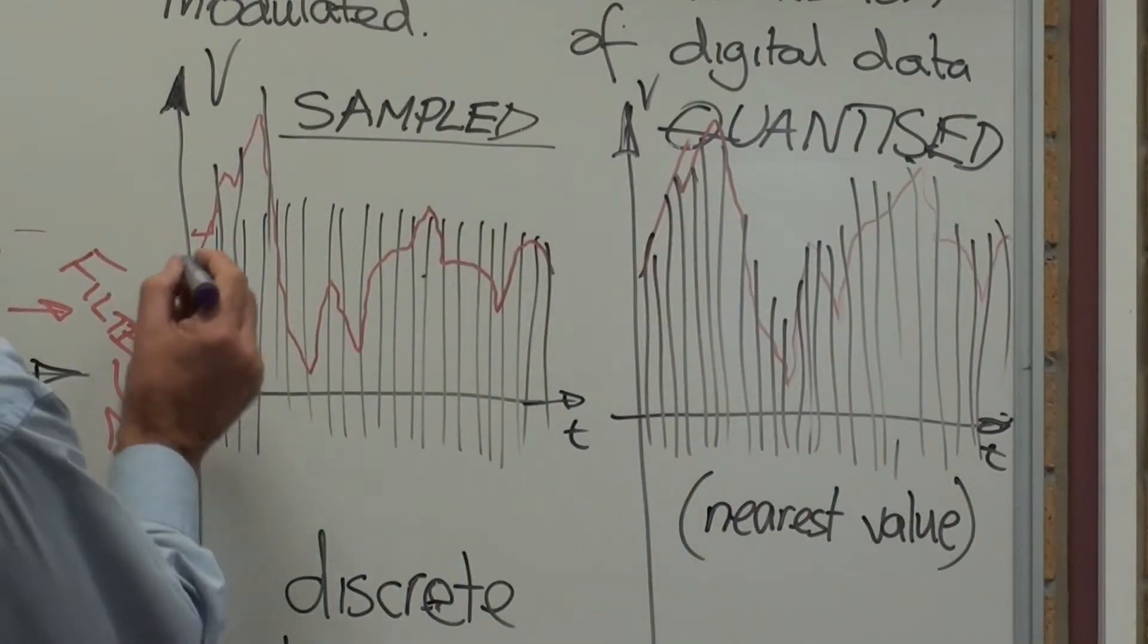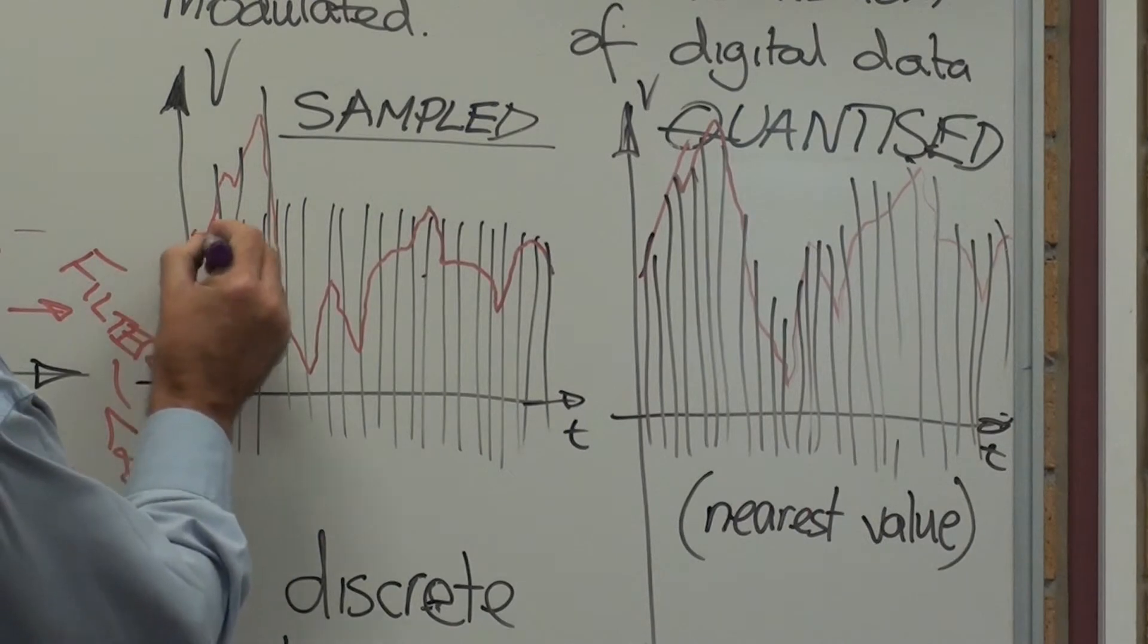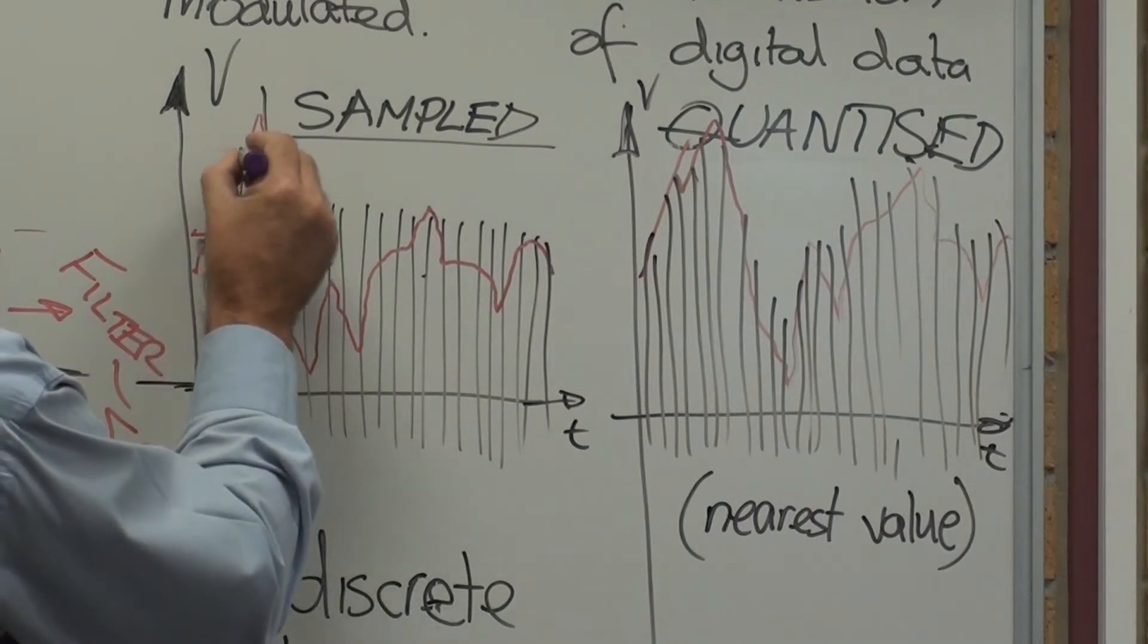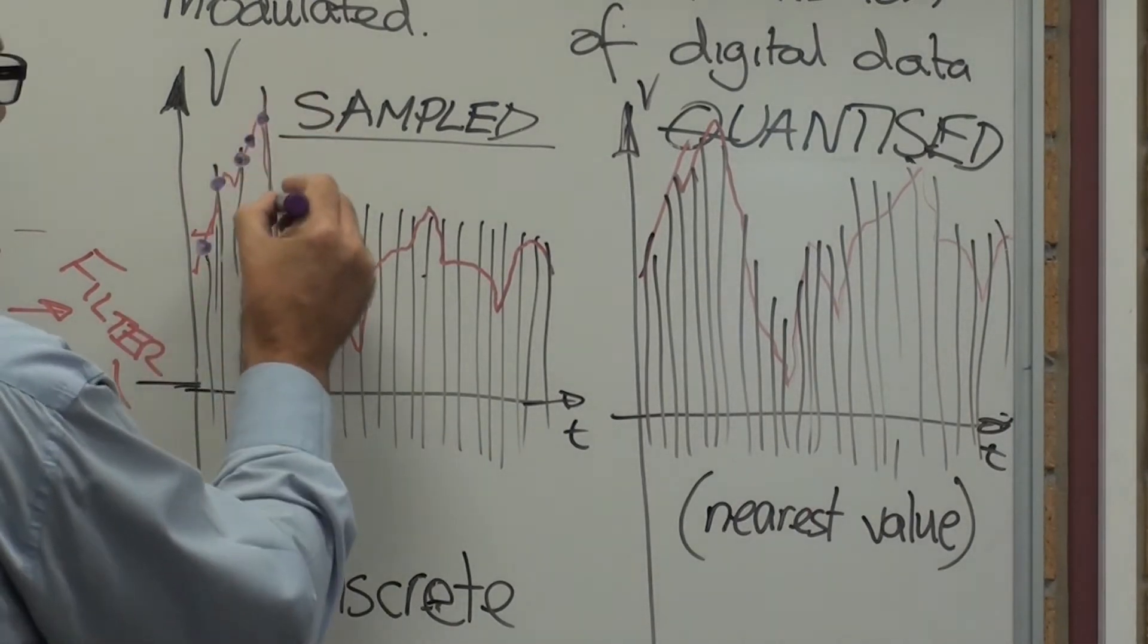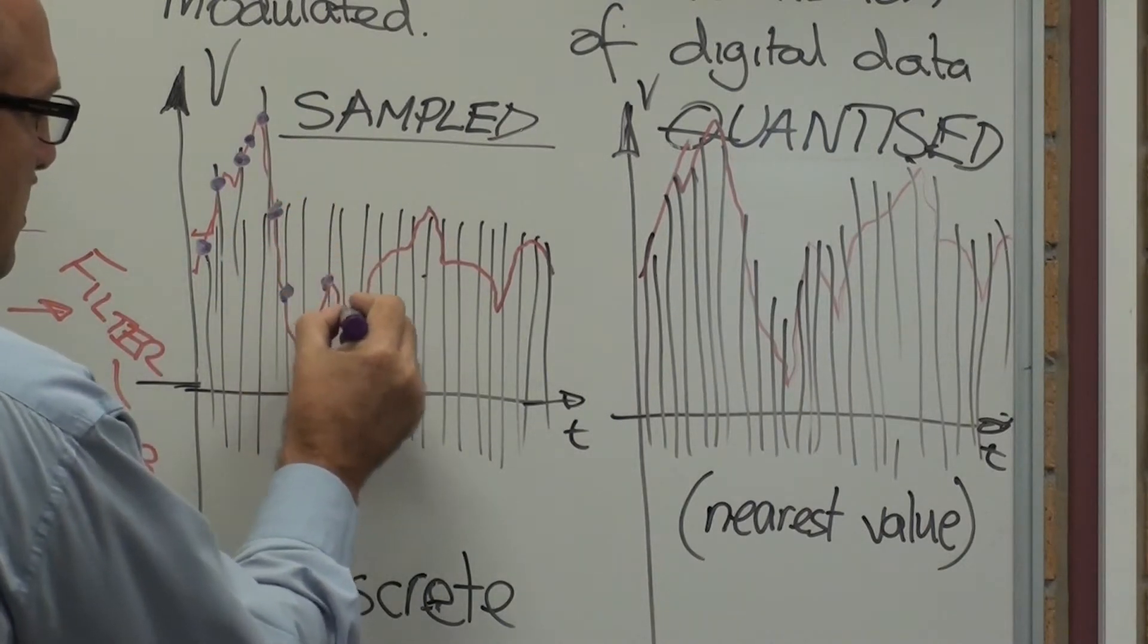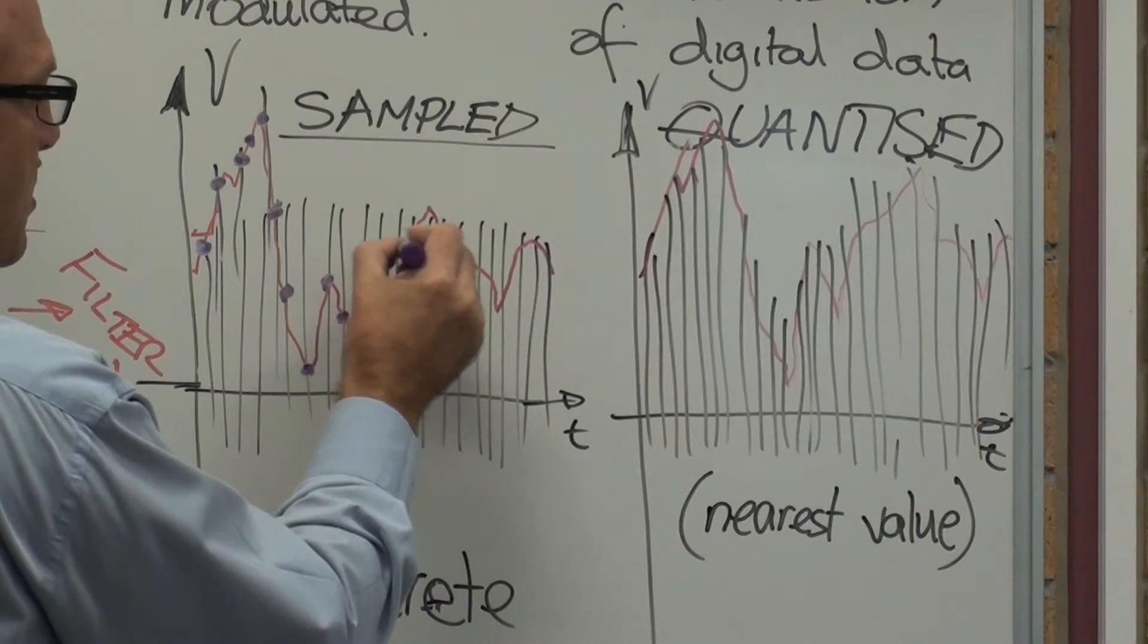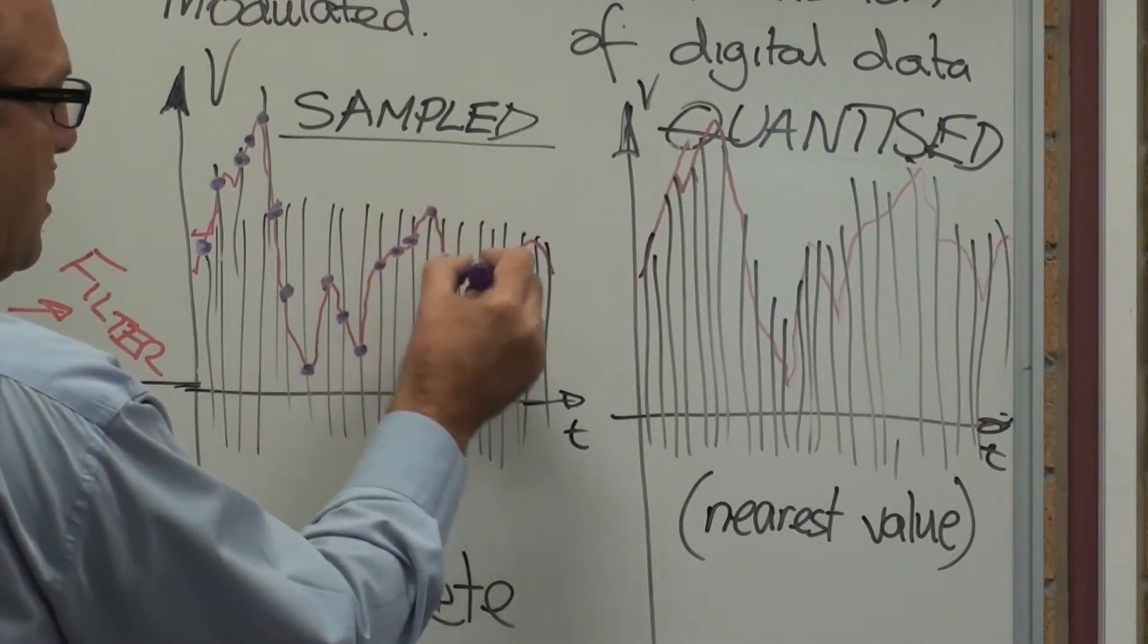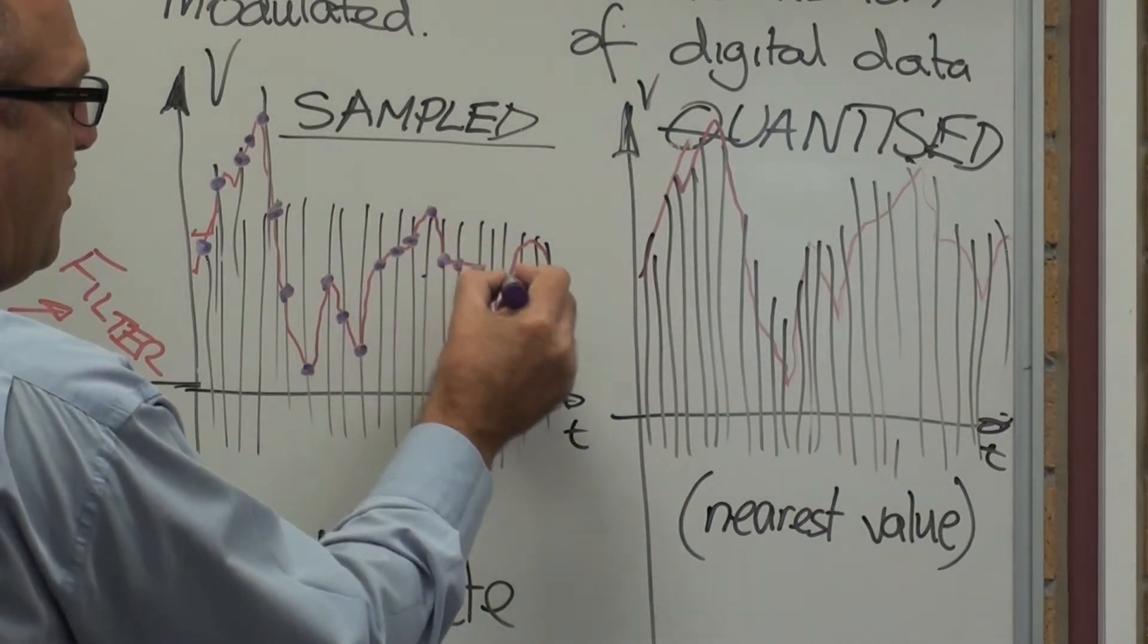So when we sample every 144,100th of a second, they take a value. Like so. I'll just keep on going through.